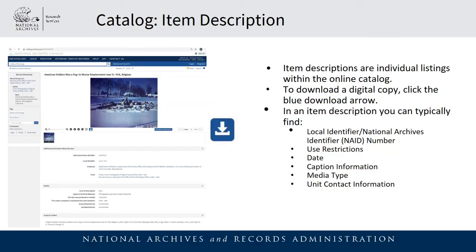After you've found the specific photograph you're interested in, you will typically find an individual item description. In an item description you can find a lot of helpful information — note the local identifier number or the National Archives Identifier (NAID) because that will lead you back to this catalog record. You can also find caption information such as the date, any known copyright information usually found under use restrictions, and the media type, which will note if the image was reproduced from a negative, photographic print, or another format.